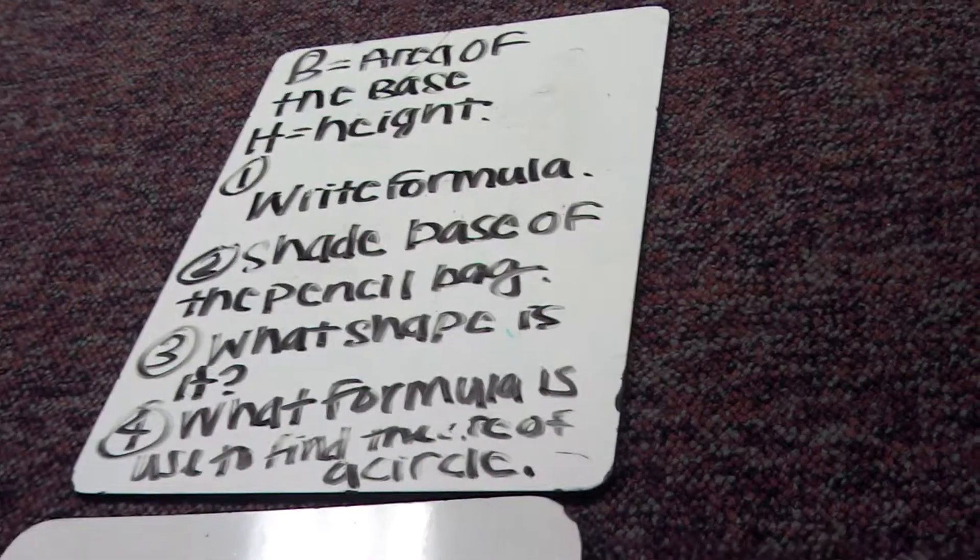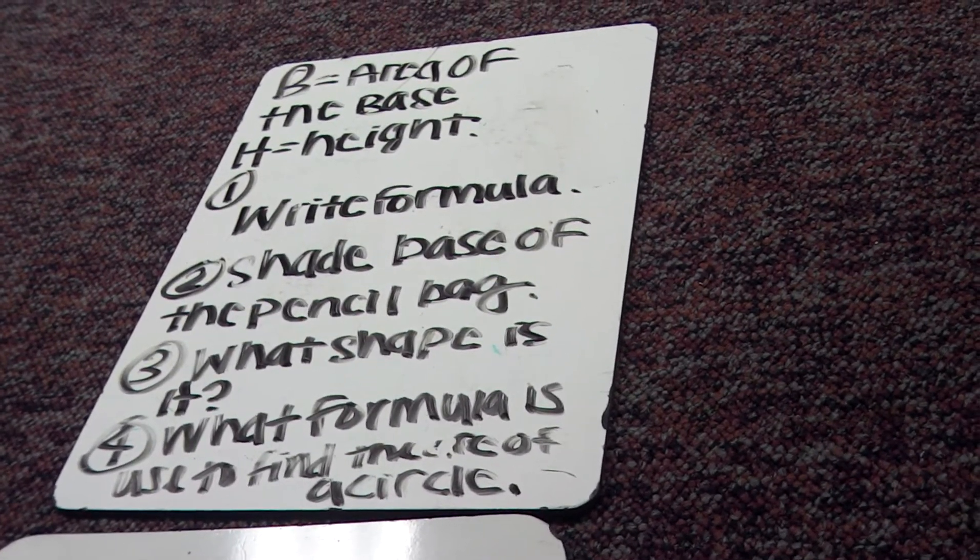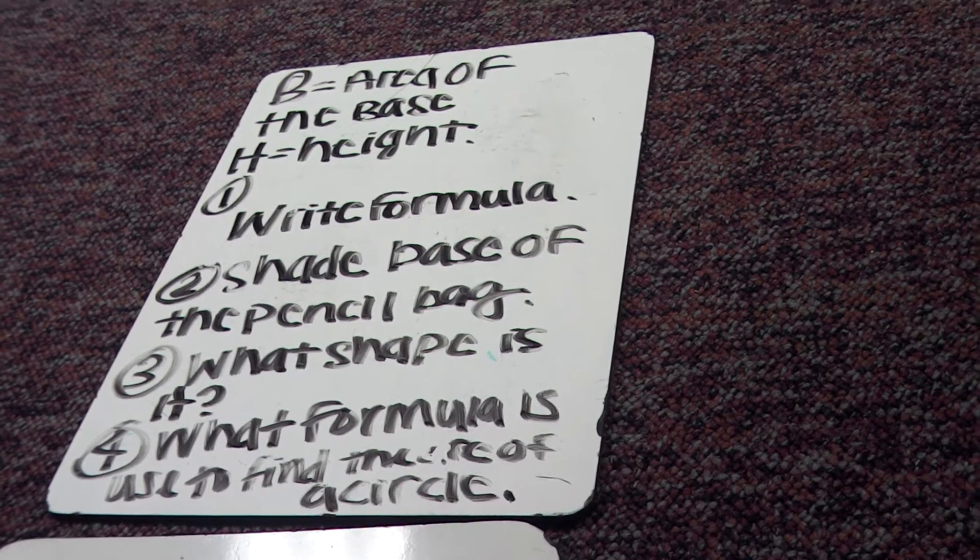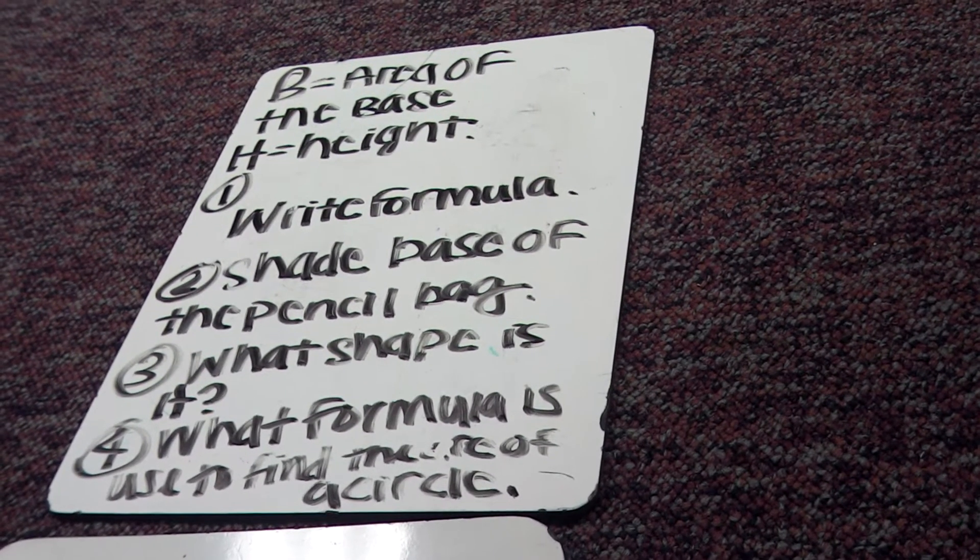Today we are learning about the volume of cylinders. V equals the area of the base, H equals the height.